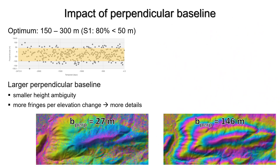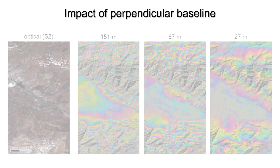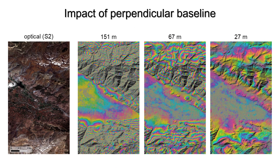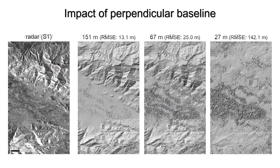As shown in the second figure, higher perpendicular baselines lead to more fringes and thus more accurate height estimates. This figure shows how the amount of fringes decreases with shorter perpendicular baselines. As a consequence, the quality of the resulting DEMs decreases, as shown in this hillshade representation.